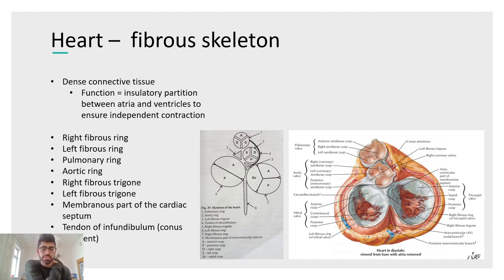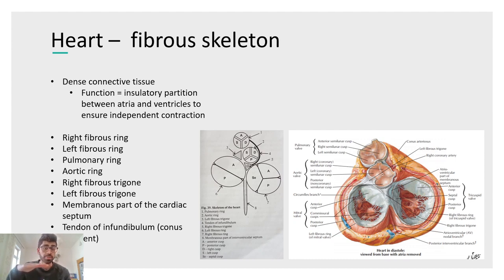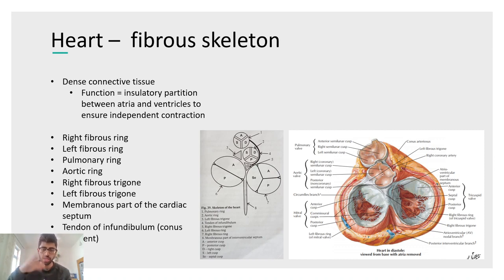The fibrous skeleton is a dense connective tissue structure located between the atria and ventricles. To understand it, relate the abstract white book scheme to the Netter's atlas image alongside it. Its essential function is to divide the atria from the ventricles, ensuring independent contraction. It acts as an insulating barrier, so no electrical conduction passes through except via designated pathways — any deviation from these pathways results in arrhythmias.